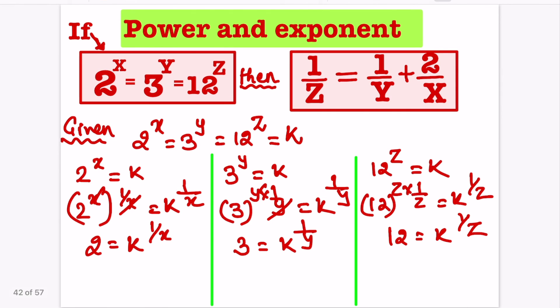Given 2 power x is equal to 3 power y equal to 12 power z, then we have proved that 1 by z is equal to 1 by y plus 2 by x. Hope you liked this tutorial. See you in the next tutorial. Goodbye!